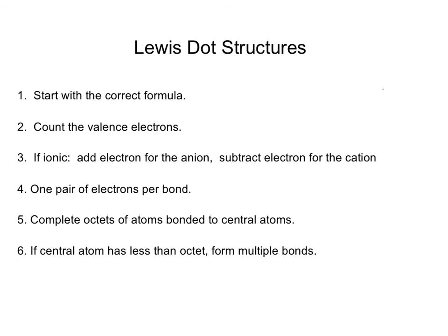Now we're ready to start Lewis dot structures. Lewis dots give you information about the number of covalent bonds, the type (single, double, or triple), and how many lone pair electrons there are. However, you don't get the geometry of the molecule from Lewis dots — that's where the VSEPR model comes in. You can draw bonds at right angles in a Lewis structure, but that has nothing to do with reality.